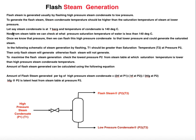Flash steam is generated by flashing high pressure steam condensate to low pressure. To generate flash steam, the steam condensate temperature must be higher than the saturation temperature of steam at the lower pressure. That is, if we have high pressure condensate at pressure P1 and temperature T1, and we reduce pressure to P2, where T2 is the saturation temperature at P2, then T1 must be greater than T2.